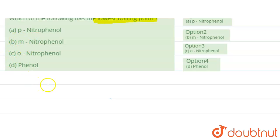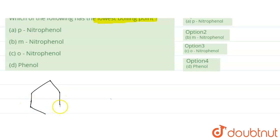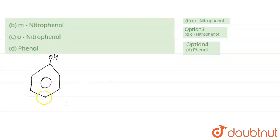First, let us draw para-nitrophenol. We start by drawing the benzene ring. On the benzene ring, OH is present — that is phenol. The ortho, meta, and para positions are noted, and the NO2 group is placed at the para position — this is para-nitrophenol.